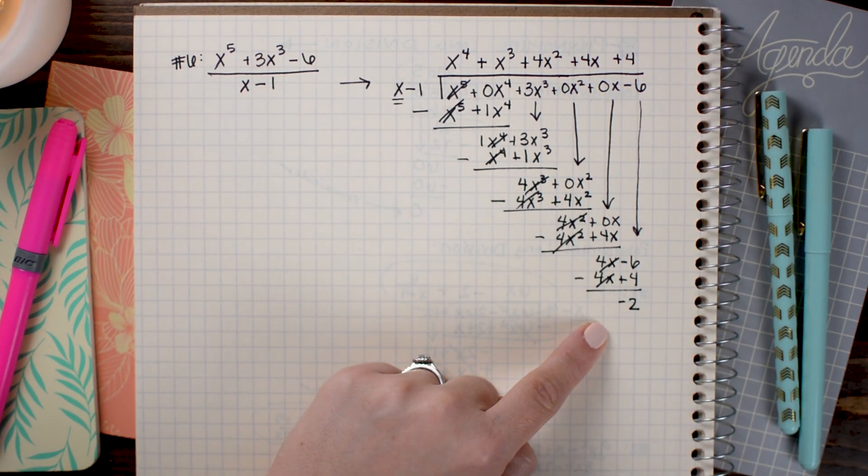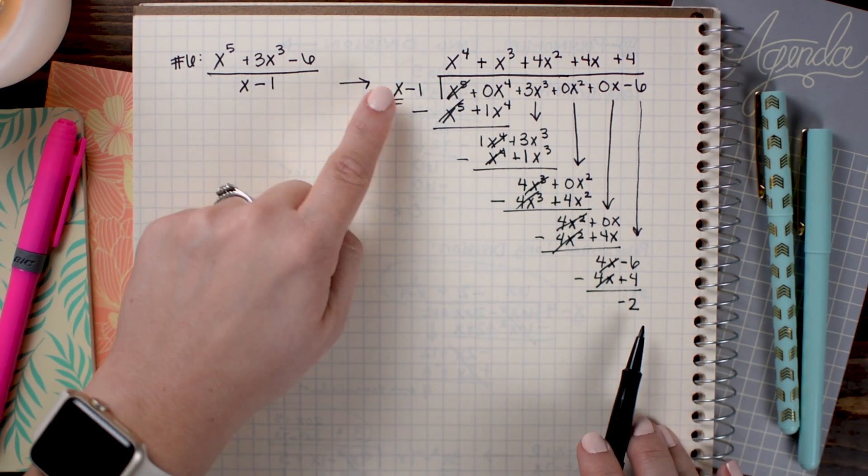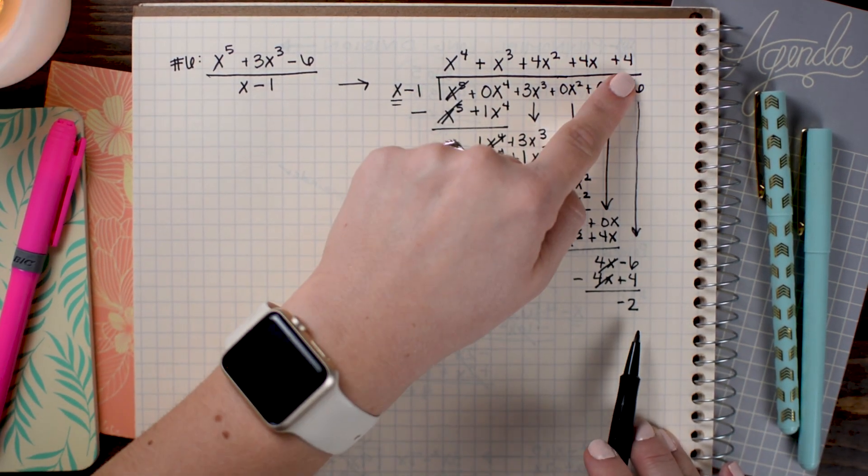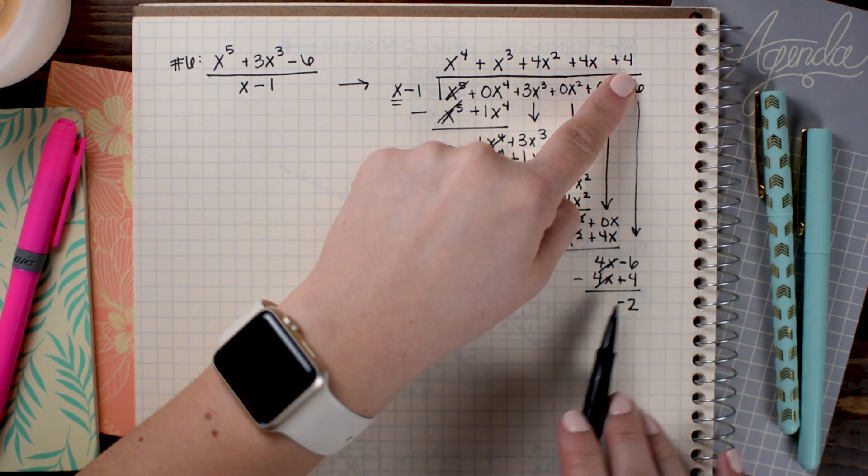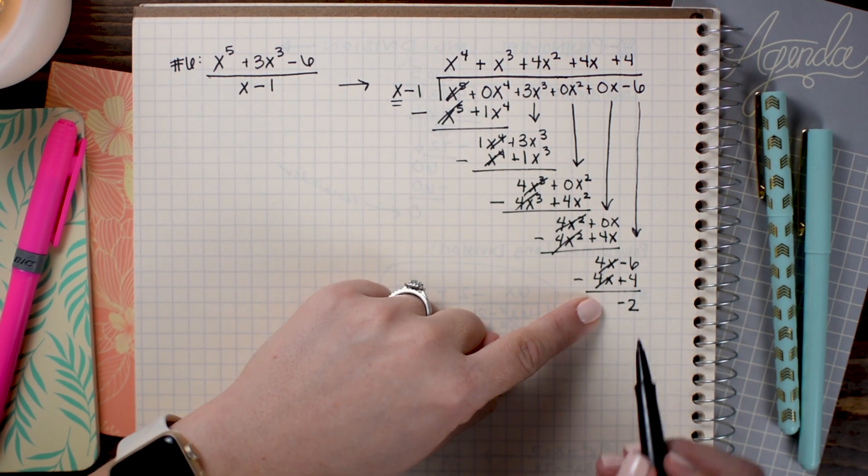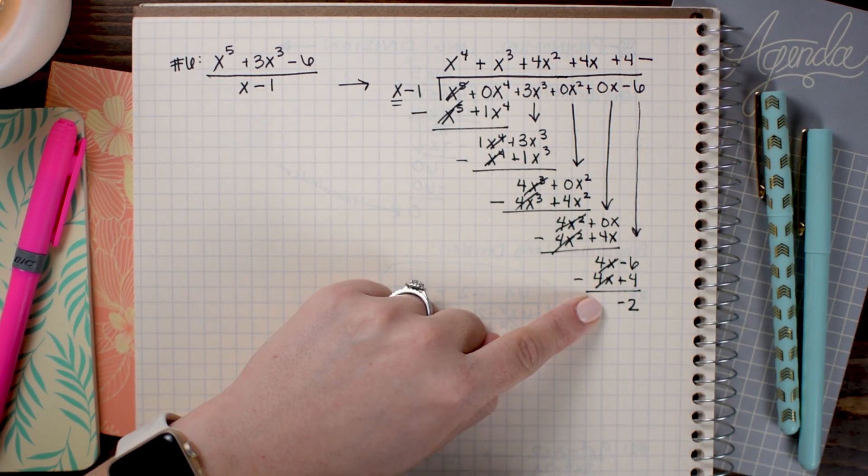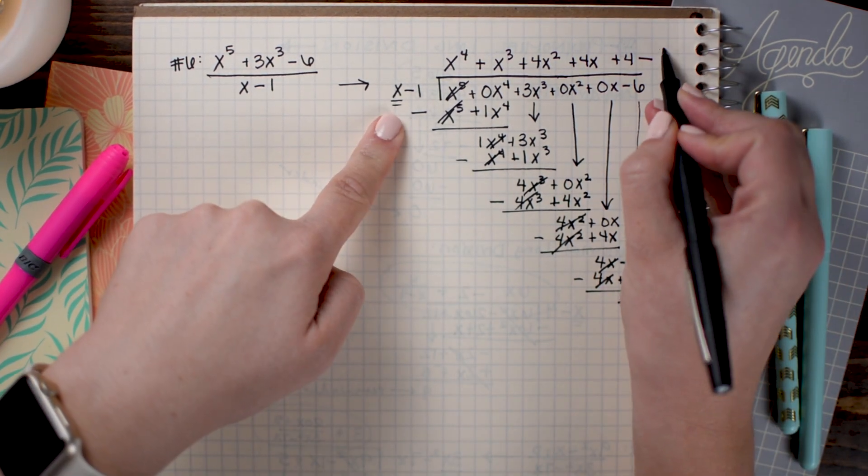This is my remainder. So whenever I have a remainder I write it over my divisor and I add it to the polynomial. Since this is a negative I could simply write a minus sign here and then do 2 over (x - 1).